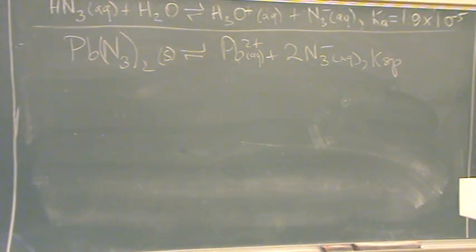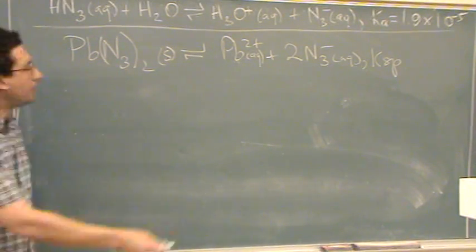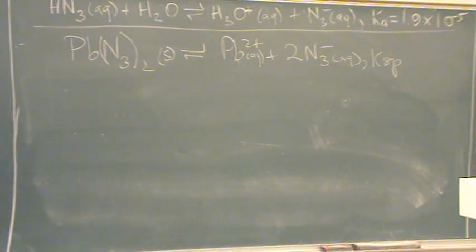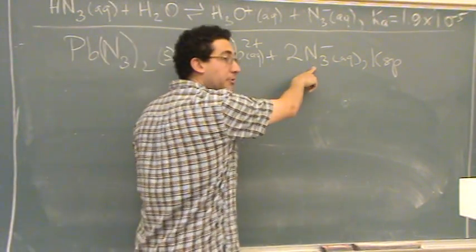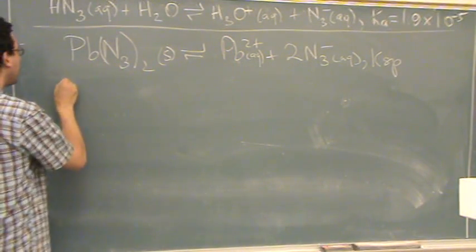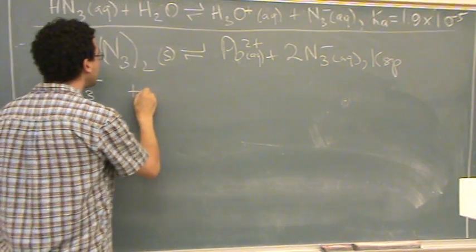These are both aqueous in the products. And I know the Ksp from the previous part of the problem, it was given. It says this is in a pH 2 solution. What does that mean? It's acidic. So what here of the products could react with the acid? The N3 minus, so you're looking for the negative if you're adding the acid.